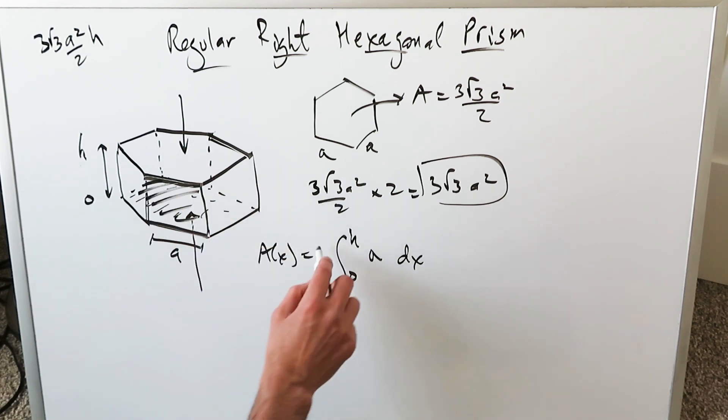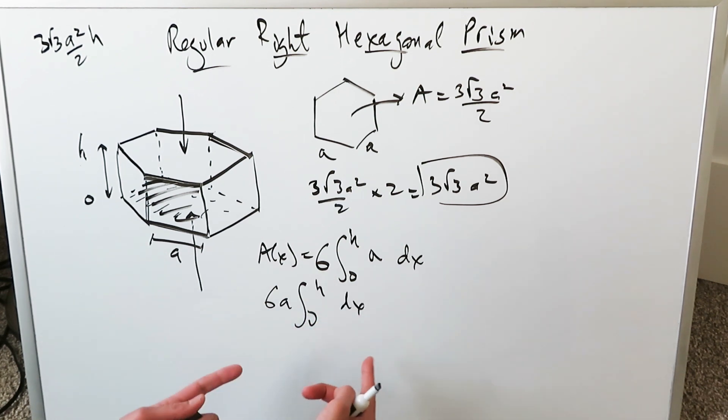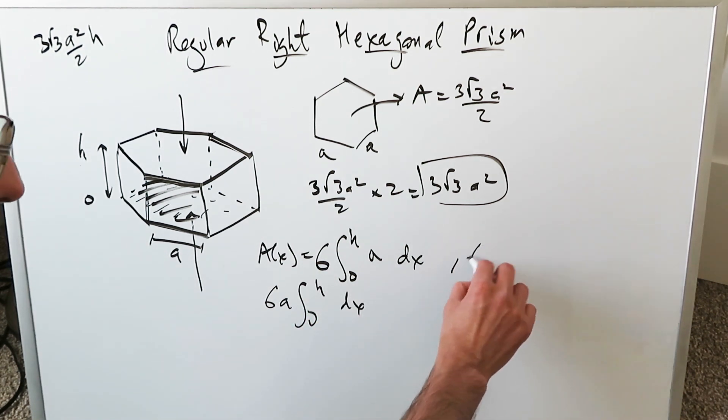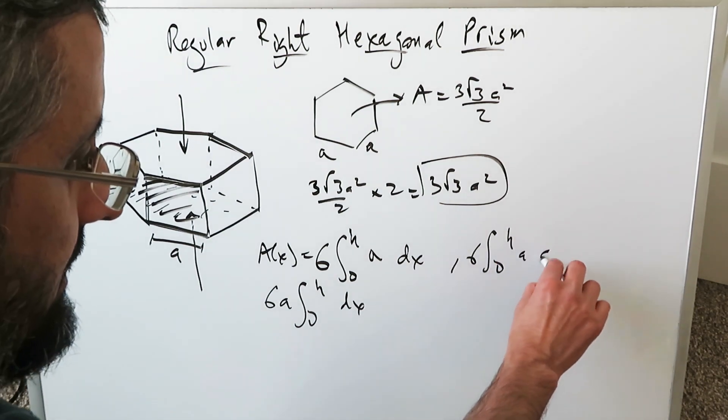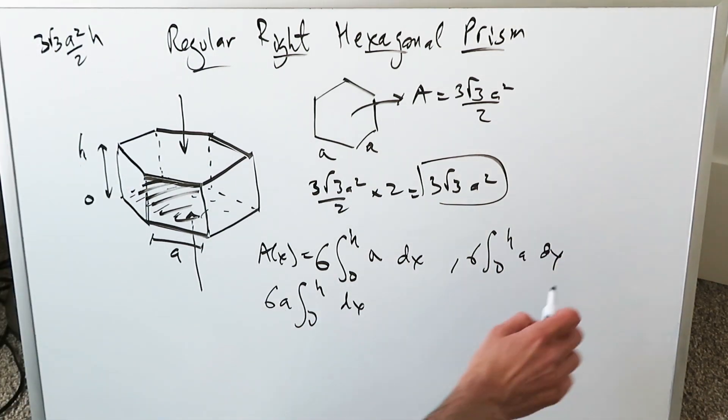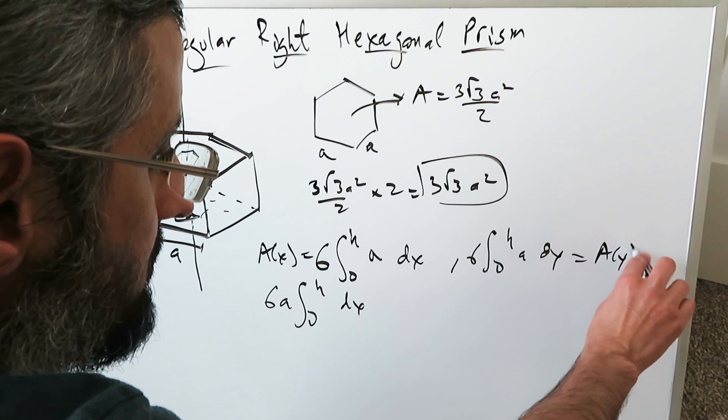But since there's 6 faces, you can modify your integral to be that. Then you're looking at 6A and then 0 to H dx. All of this can be with regards to dy. You can even say 6, 0 to H, A dy. It wouldn't matter either way, and this would be equal to area with respect to y.